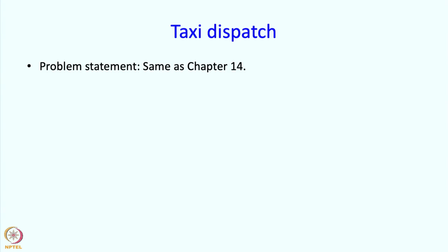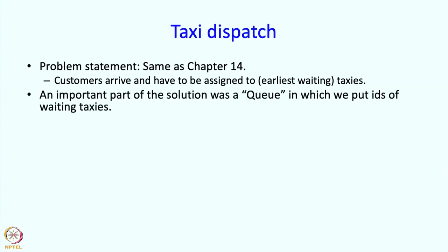The taxi dispatch problem we saw earlier is discussed in chapter 14 of the book. So briefly we have customers arriving and have to be assigned to waiting taxis. An important part of that solution was a queue and into this queue we put the IDs of the waiting taxis or rather the IDs of the waiting drivers.